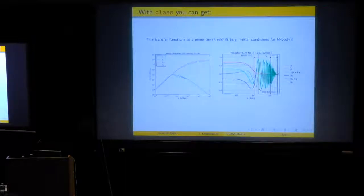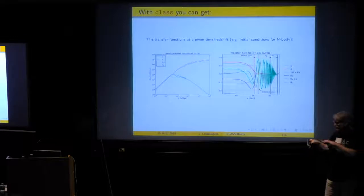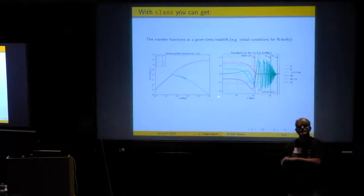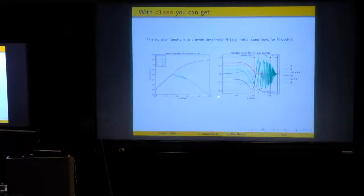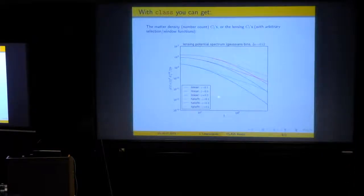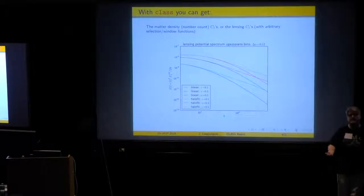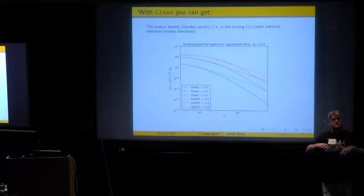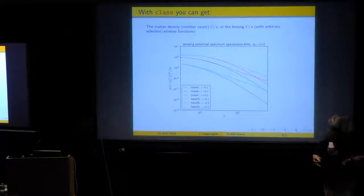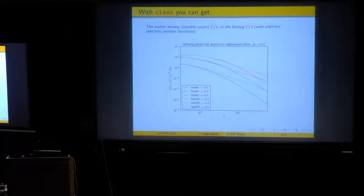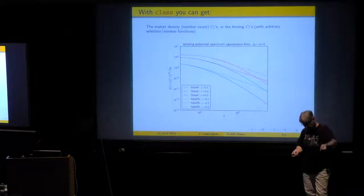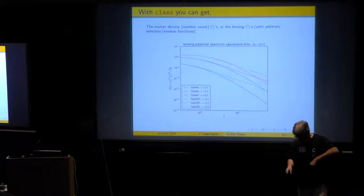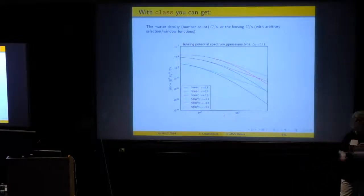So all this can be done without hacking the code. You don't need to open it and to write a print, blah, blah, blah. From the input file or script, you have full control on this kind of output. Now, if you are a large-scale structure expert, maybe you don't care so much about the matter-power spectrum. You want to compute the CLs of lensing or the CLs of number count or galaxy density corrected by redshift space distortion, etc. So all this is also implemented in the code. Also, the cross-correlation between the two is implemented with lots of parameters to tune the redshift bin of your selection function.